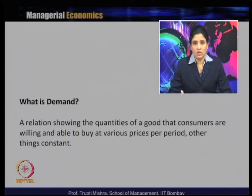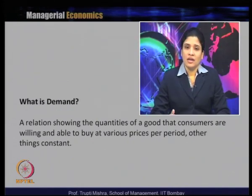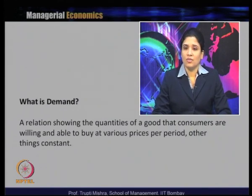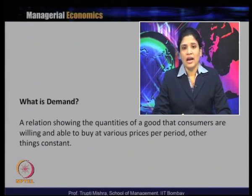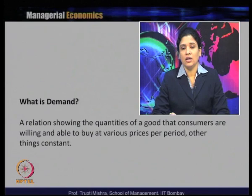We will start from the first market force, that is demand. When we define demand, it is basically a relation showing the quantity of a good that consumers are willing and able to buy at various prices per period, other things remaining constant. The other things here include income, market situation, forecasting about price — all other variables that have some say in demand for the product remain constant. The relationship between the quantity of goods and price at a typical time period is generally demand.